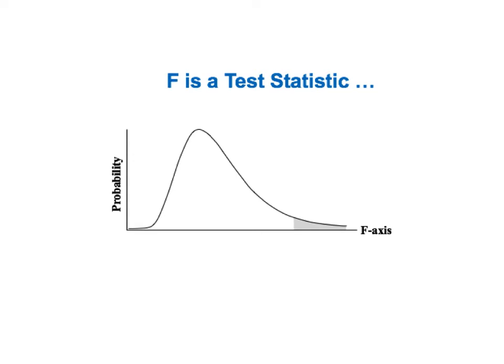F is a test statistic. There is a separate video on the concept of test statistic, but briefly, a test statistic is one whose distribution has known probabilities. So for any value of F on the horizontal axis, there is a known probability of that value occurring. That probability is the height of the F distribution curve above that point. This is called a point probability.